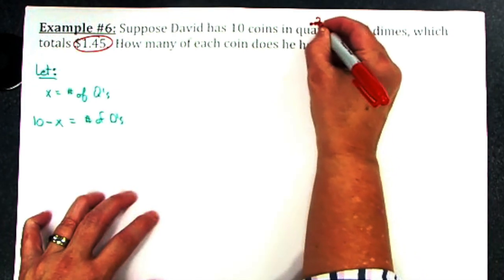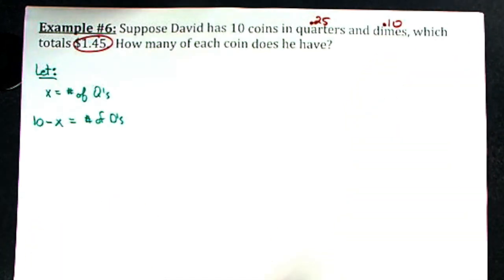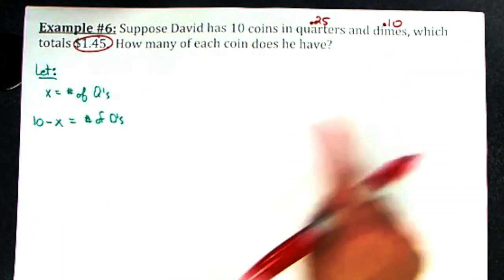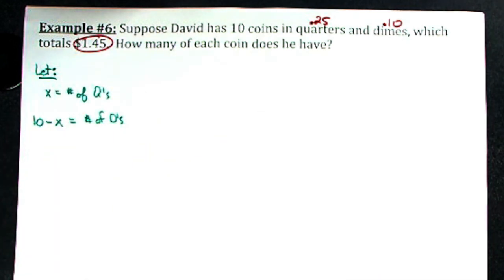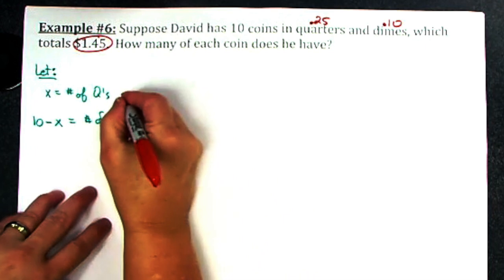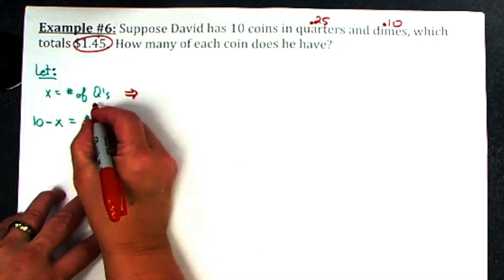Somehow I have to involve the fact that a quarter is 0.25 or 25 cents, a dime is 0.10. I have to use those numbers in here somewhere. As the way I've defined these right now, I have not.